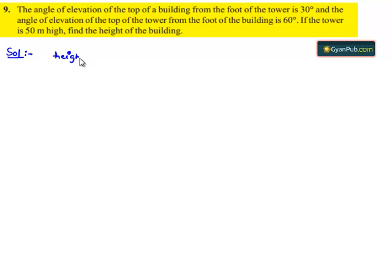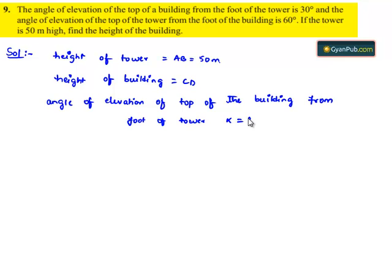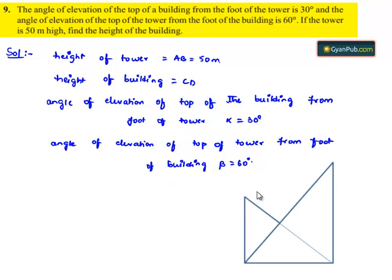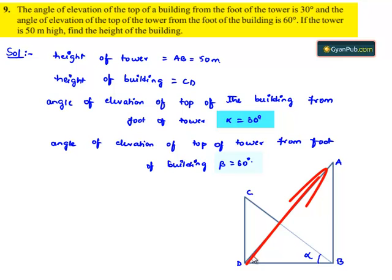Now moving on to the solution. There are two things given: a building and a tower. Let us assume the height of the tower is AB, which is given as 50 meters, and the height of the building is CD, which we need to find. The angle of elevation of the top of the building from the foot of the tower is 30 degrees — let it be alpha — and the angle of elevation of the top of the tower from the foot of the building is 60 degrees — let it be beta. From this it is clear that the tower is at much greater height than the building. So AB is the tower, CD is the building, angle at B is alpha, and angle at D is beta.